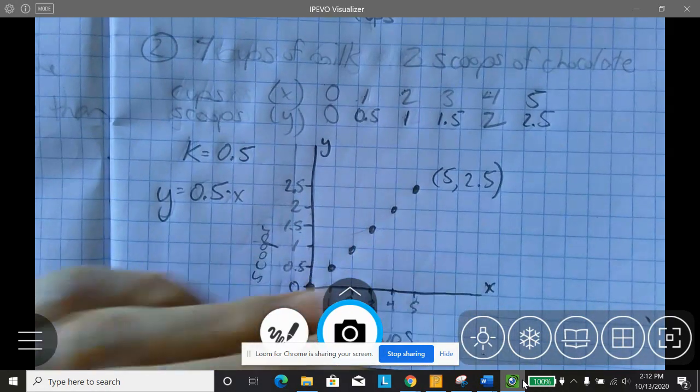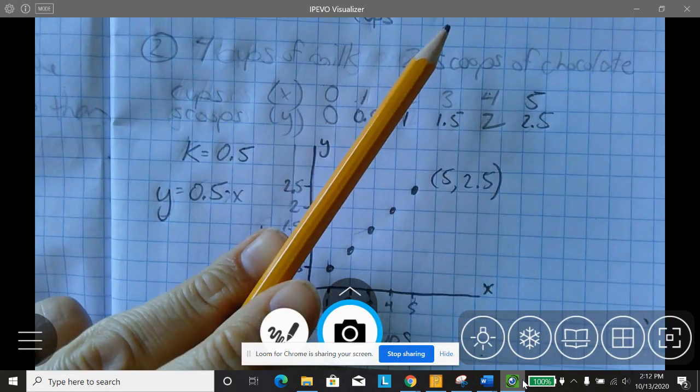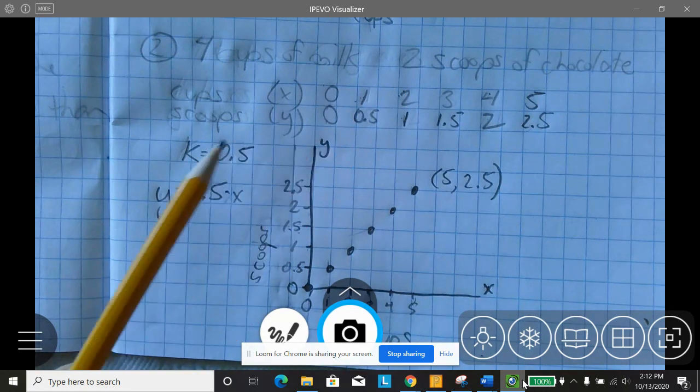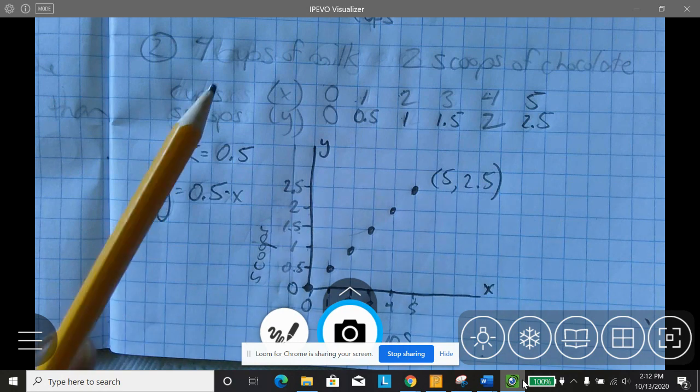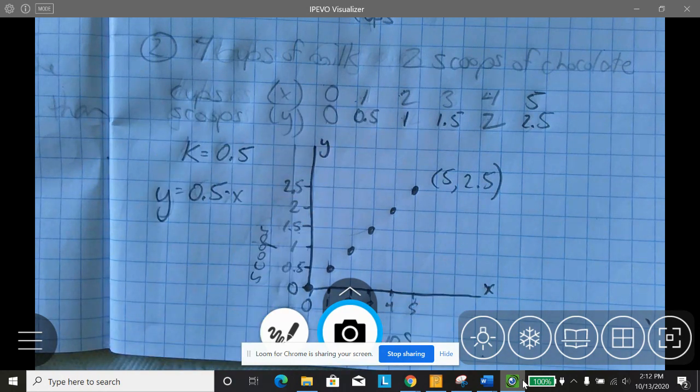So what I've just done is I've taken a proportional situation. I've written it as a table, an equation, and a graph. And all three of these are able to tell me the same information in different ways.